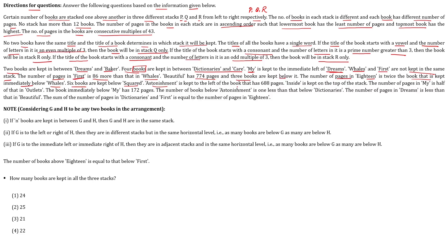Six books are kept below Squared. Astonishment is kept to the left of the book that has 688 pages. Inside is kept on the top of the stack. The number of pages in My is half of that in Outlets. The book immediately below My has 172 pages. The number of books below Astonishment is one less than that below Dictionaries. The number of pages in Dreams is less than that in Beautiful. The sum of the number of pages in Dictionary and First is equal to the number of pages in 18.